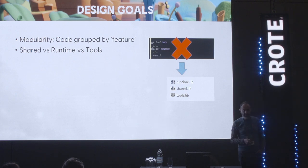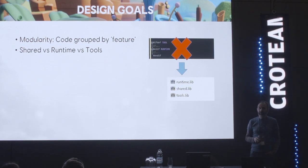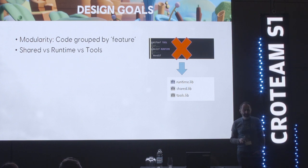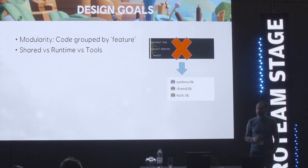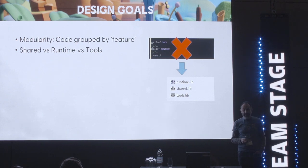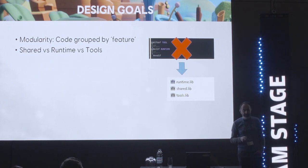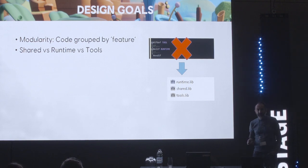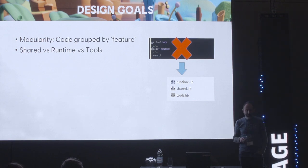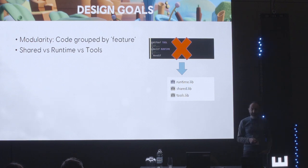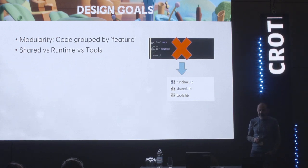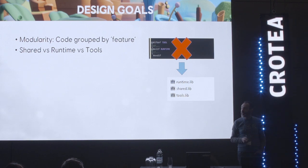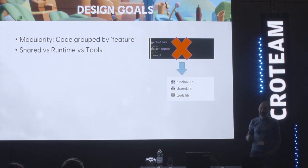The next goal — or more precisely something we wanted to keep — was the separation of code related to compilation targets. To keep conditional compilation to a minimum, we were separating code into three categories: shared code, runtime code, and tools code. We compiled shared and runtime code to build the game executable, and we compiled shared and tools code to build the editor executable. So we wanted to keep this separation in the new physical architecture as well.